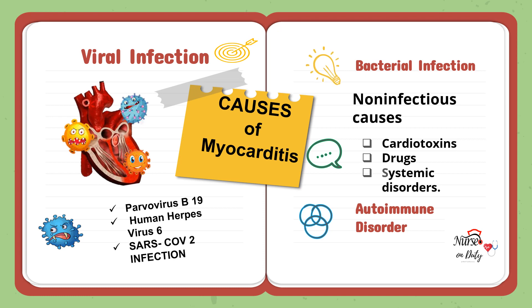Next is the bacterial infection — this is another causative agent. Mayroon din pong non-infectious causes like cardiotoxins. Cardiotoxicity is the condition where there is damage of the heart muscles. Pwedeng result ito ng mga chemotherapy drugs, and possible din yung antibiotics such as penicillin, sulfonamide drugs, and other anti-seizure medication and some illegal substances like cocaine. Another one is systemic disorder, like those with autoimmune disorder — a good example is HIV AIDS.